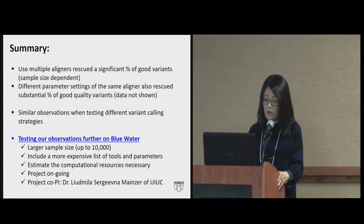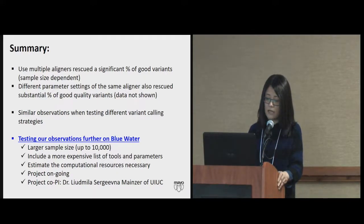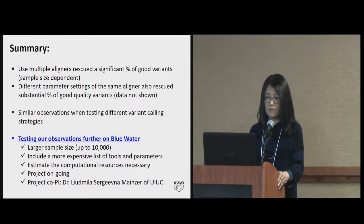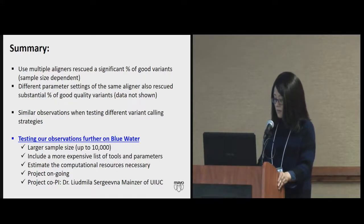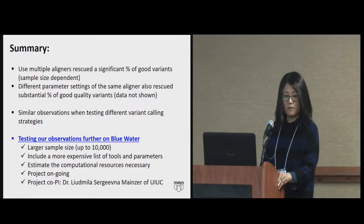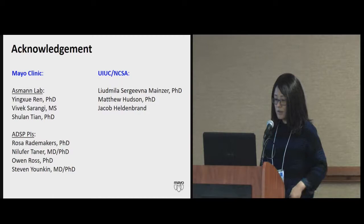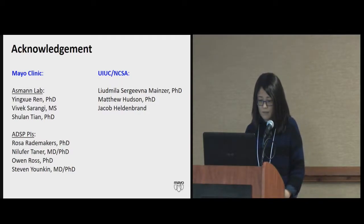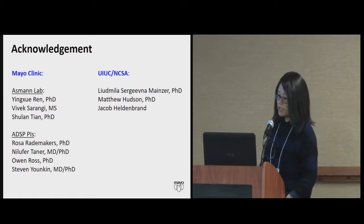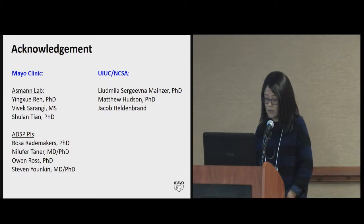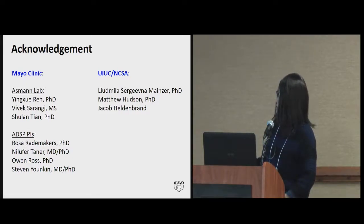Here's what we propose to do on BlueWater. We just got a project approved: we're going to look at the entire 10,000 individuals from the Alzheimer's Disease project, using more aligners and different parameter settings within each aligner. We're also going to estimate the computing cost and what's practical. My co-PI is Luda from UIUC, and Jacob is the one starting to put data onto BlueWater.